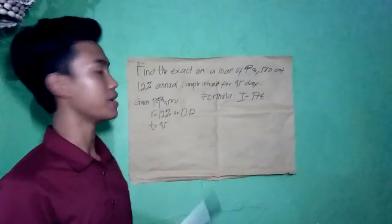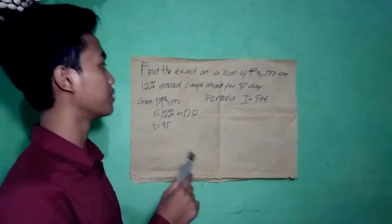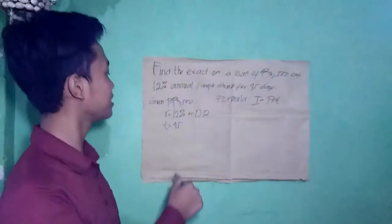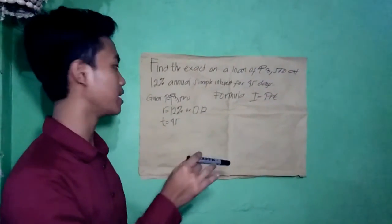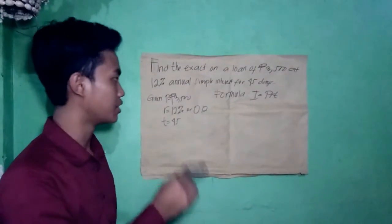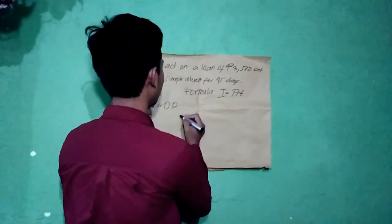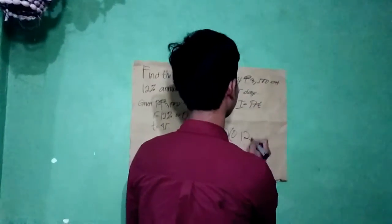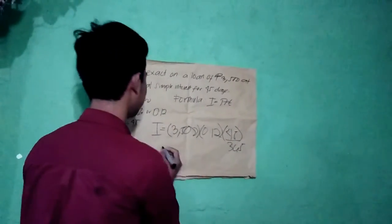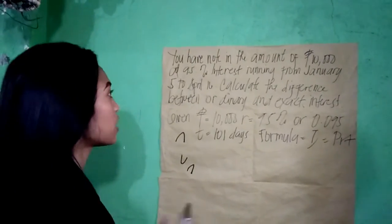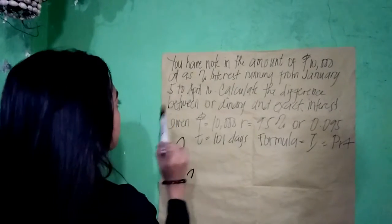Eighth problem: Find the exact interest on a loan of 3,500 pesos at 12% annual simple interest for 45 days. Given: Principal is 3,500 pesos; Rate is 12%, or 0.12 in decimal; Time is 45 days. Formula: Interest equals Principal times Rate times Time. The answer is 51.78. This concludes the ordinary and exact interest problems.